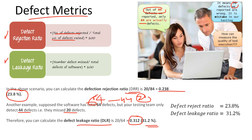So defect rejection ratio is 23.8 percent and defect leakage ratio is 31.2 percent. These are the two important metrics we need to use in testing when you calculate or measure the quality of your test execution.